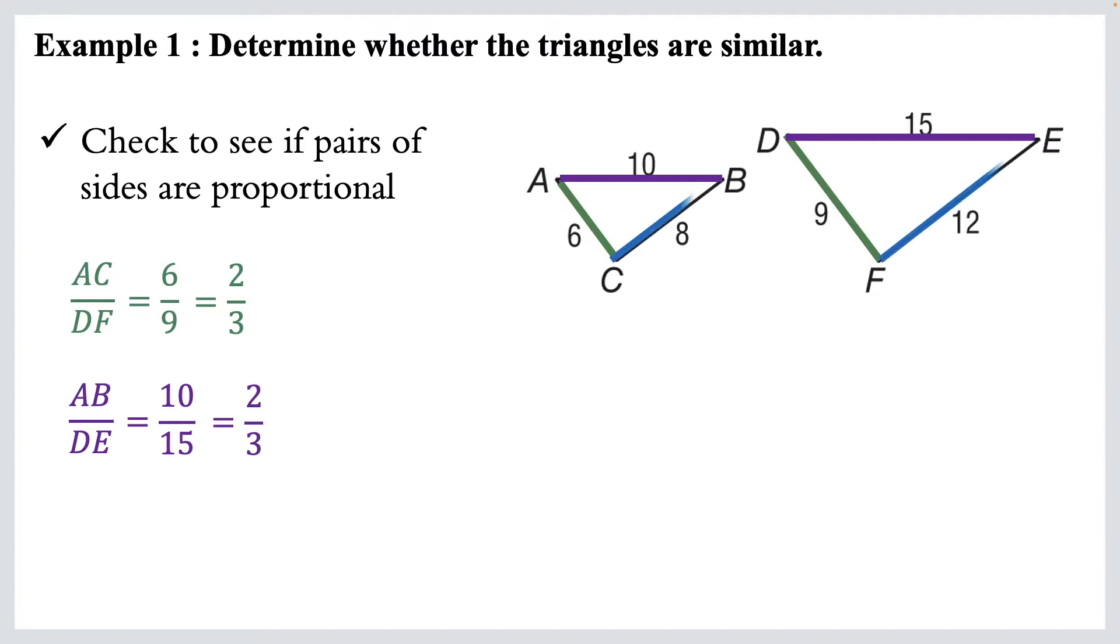Last pair. We've got eight partnering with twelve, so CB partners with FE. Those lengths are eight and twelve, and if we reduce that fraction, we get two over three again. So because each of those fractions reduced to the same, two over three, we're good to go. We have similar triangles.